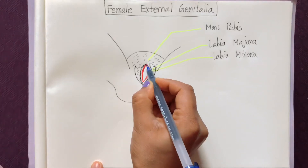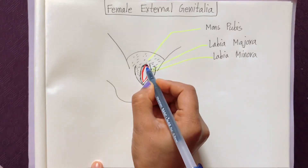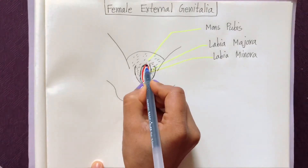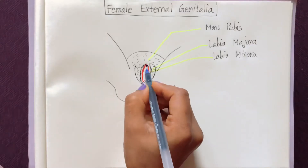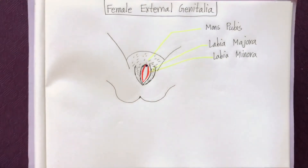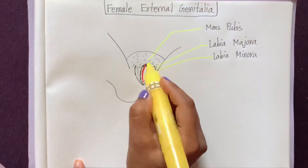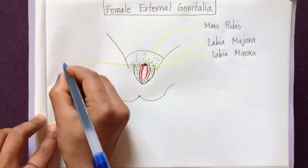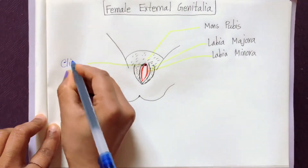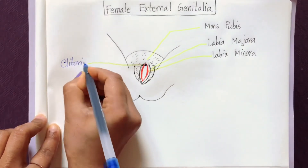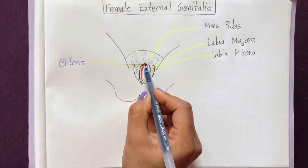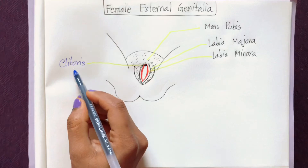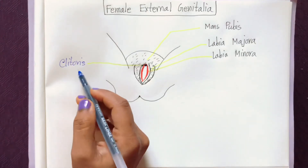At the upper junction or meeting point of the labia minora, another tiny structure is present — a tiny finger-like structure called the clitoris. The clitoris is a tiny finger-like structure and it contains erectile tissue — specifically two bundles of erectile tissue.